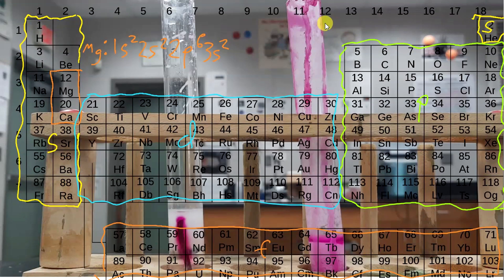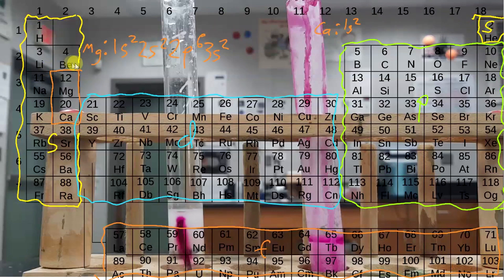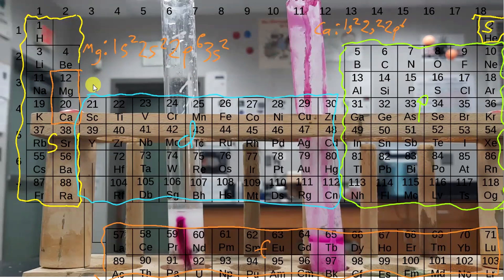Let's try calcium now. Calcium is going to start off the same way: 1S2, then 2S2, then 2P6. Then it's going to go 3S2, and across to 3P, and there are 6 of them — so 3P6. And then down to 4S2.